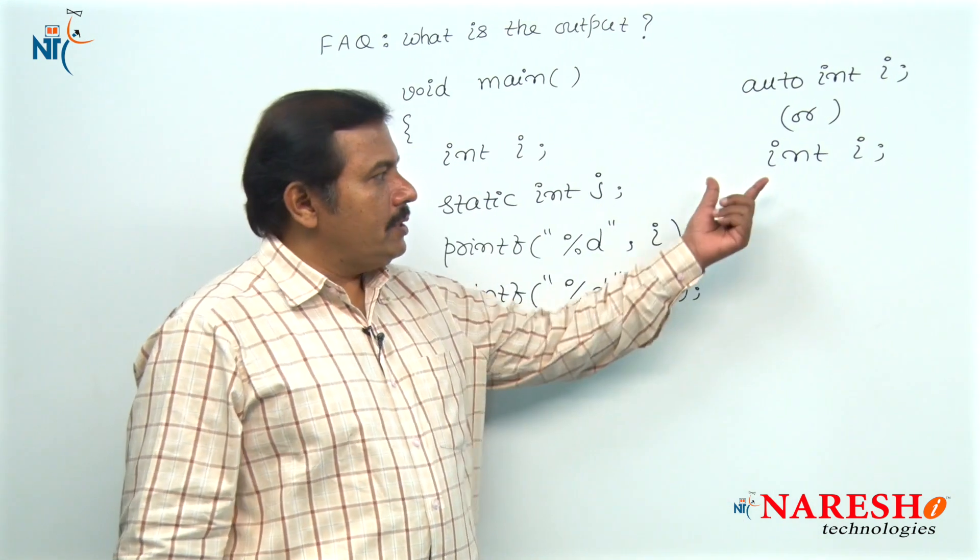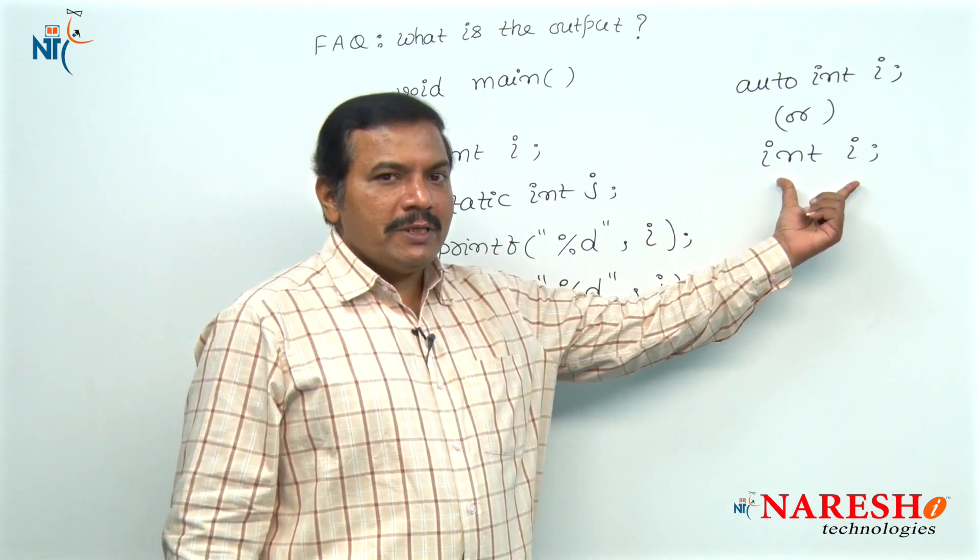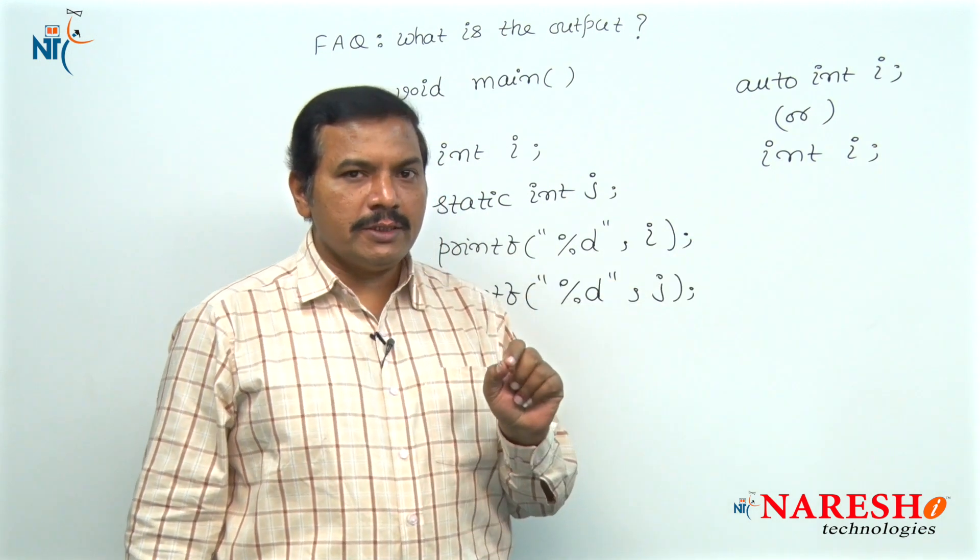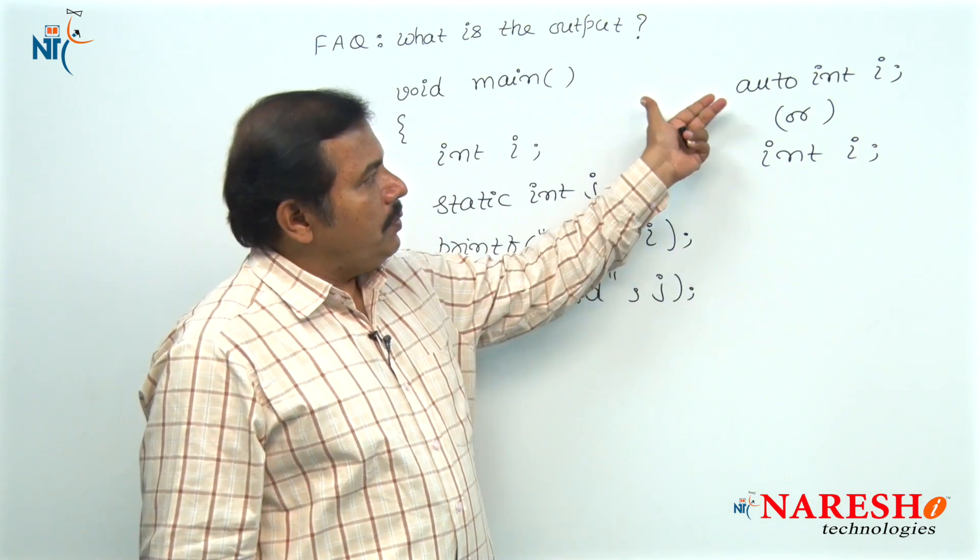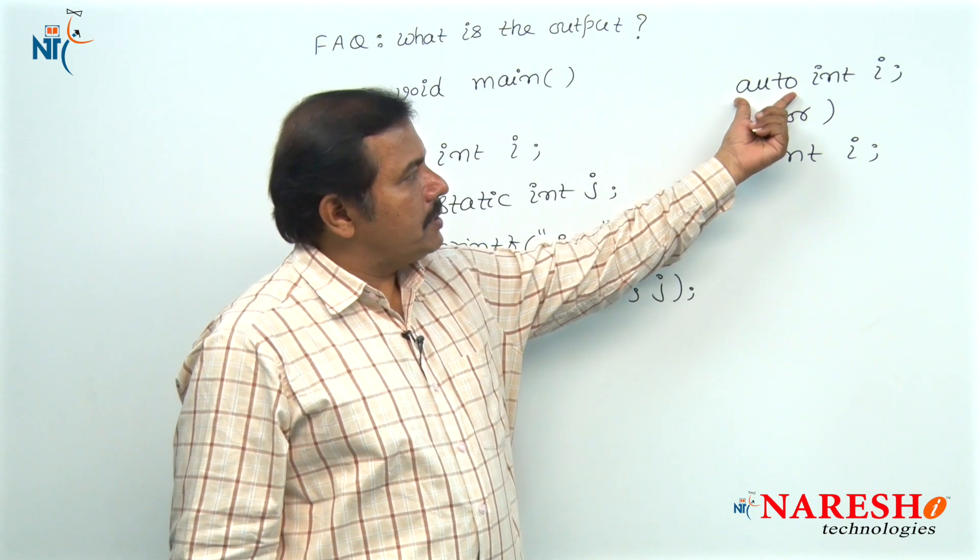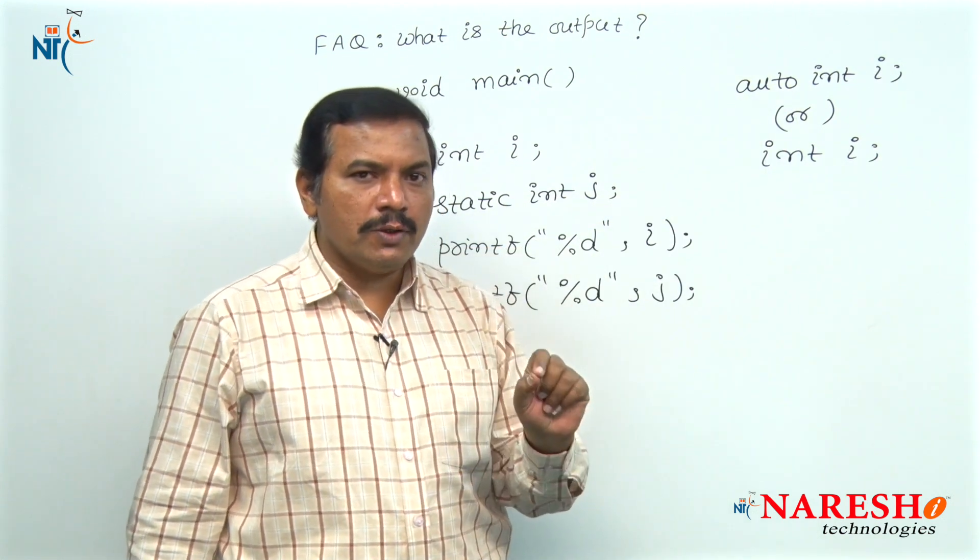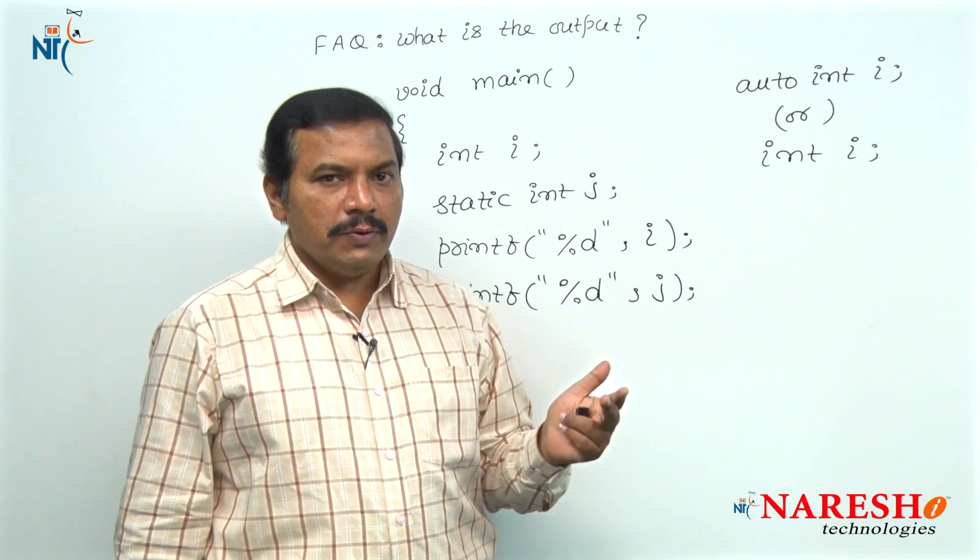Hence, by default, the storage class specifier for any variable is auto. You may declare automatic variables using keyword auto, or you may also ignore that auto keyword.